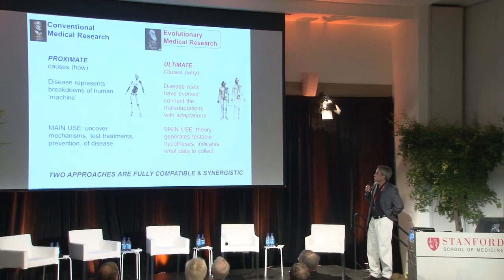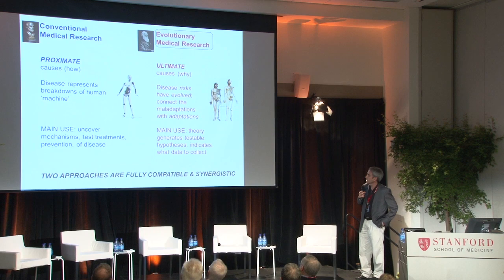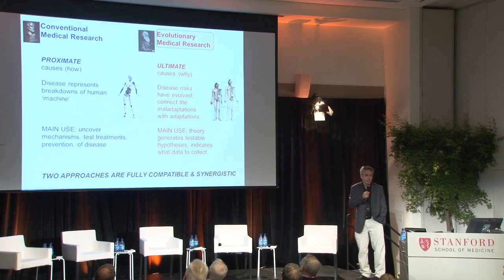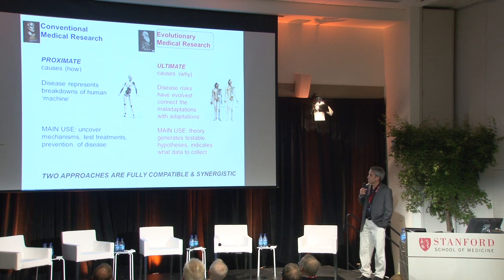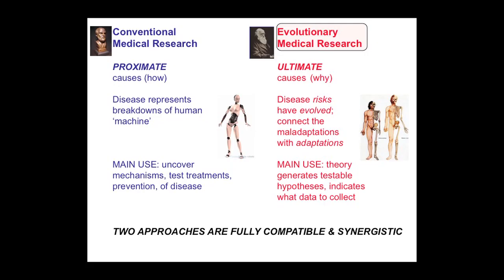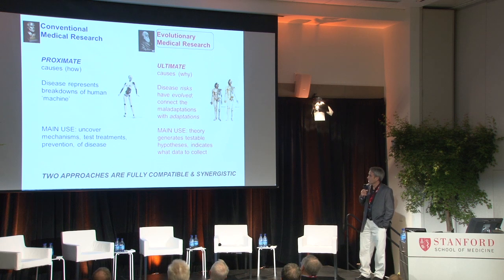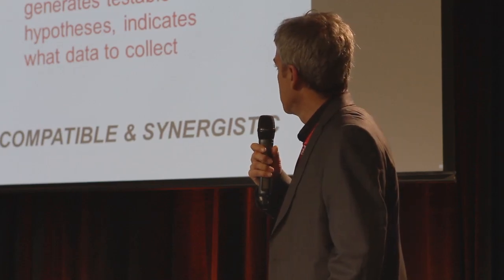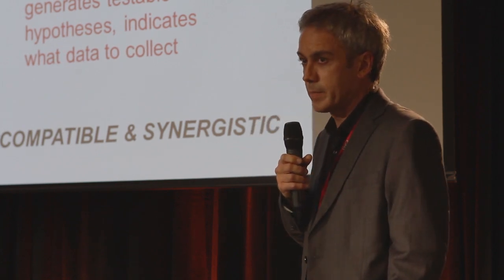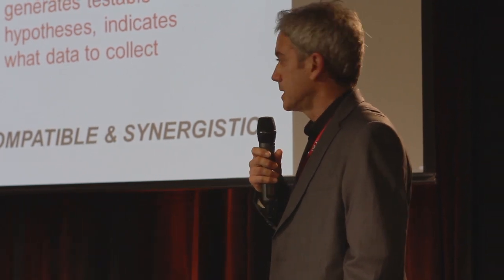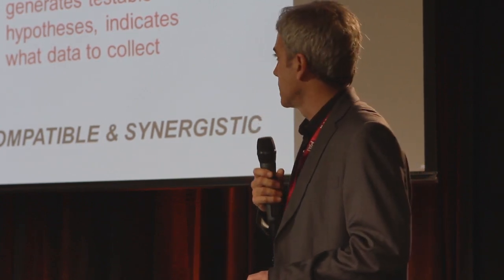I'm going to be talking today about evolutionary medicine in the context mainly of autism and schizophrenia. We can look at the contrasts between conventional medical research and evolutionary medicine in terms of the differences between looking at proximate causes and ultimate causes — conventional medicine looking at disease as breakdowns of the human body, whereas an evolutionary approach focuses on how and why disease risks have evolved, connecting maladaptations with the adaptations that have gone awry. The main use of evolutionary medicine is that it allows us to generate novel testable hypotheses that would not otherwise have come to mind, and it tells us what data to collect. The two approaches are completely compatible and indeed synergistic.